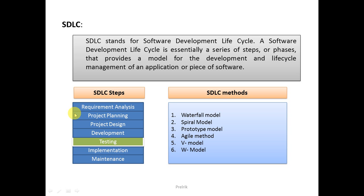The next phase is Project Planning. In project planning, they decide which model to work in — there are different SDLC models like Waterfall, Spiral, Prototype, Agile, V, and W models. They decide the model, and also determine the risk, scope, entry criteria, exit criteria, assumptions, budget, and risk analysis.